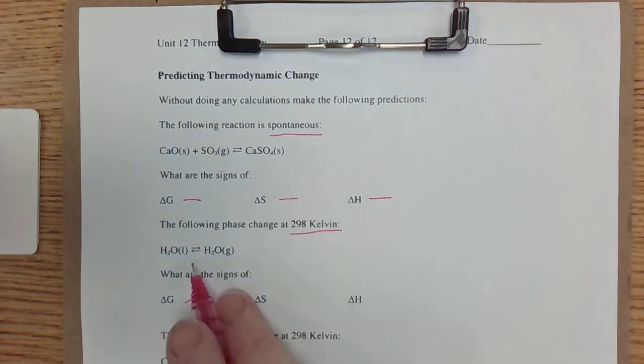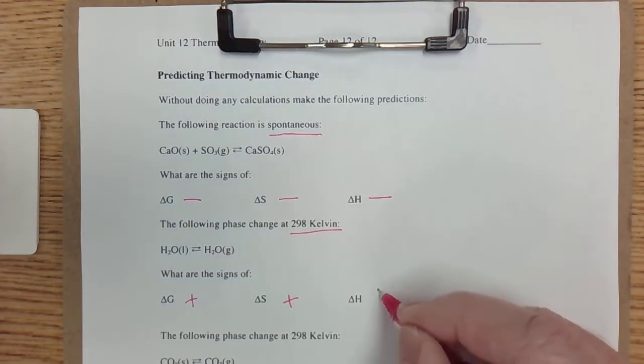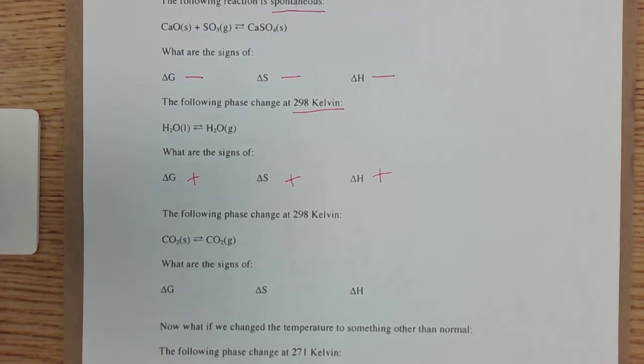Now ΔS—well, liquid to gas is most definitely a positive ΔS. The molecules are much more spread out. And now I'm going to phrase the question strangely, but how do you boil water? You heat it, don't you? That's endothermic. That means ΔH is positive, heat going in.